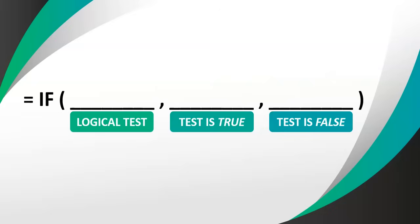The third parameter is what will be done if the test is false. If the logical test is false, we skip the second parameter and move straight to the third one — what to do if the test is false. That could be some text that is displayed, or a formula. So basically: look at the logical test — if it's true, do the second parameter; if it's false, do the third parameter.